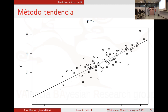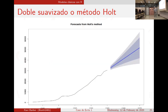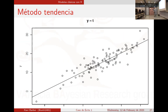Este ajuste inicialmente no parece malo: la recta pasa bastante bien aunque la serie está subiendo y bajando continuamente, no mucho peor que el método de Holt. Y ahí sí que entiendo qué es β0 y β1, estoy más acostumbrado a tratarlo y explicarlo.